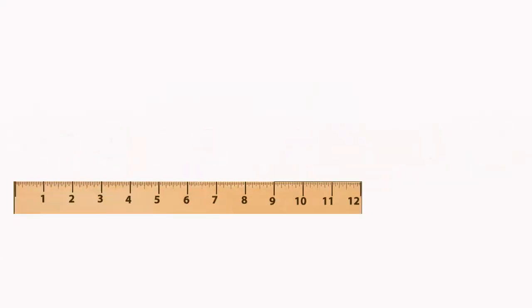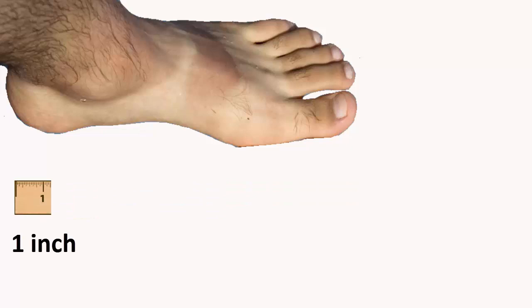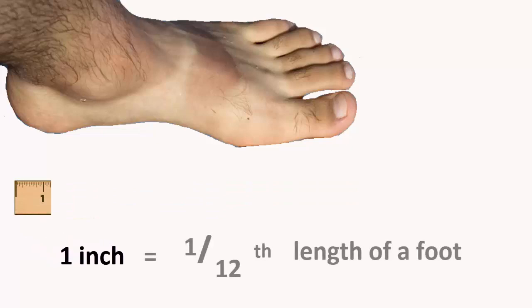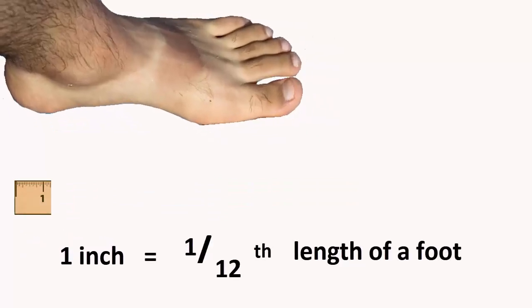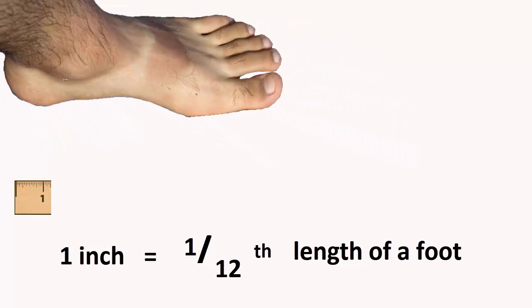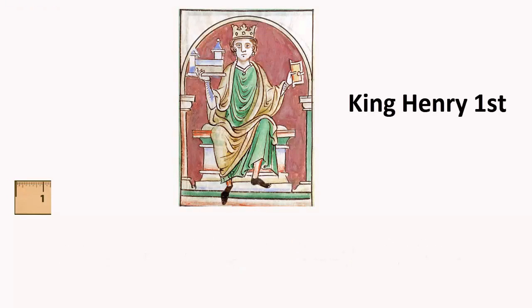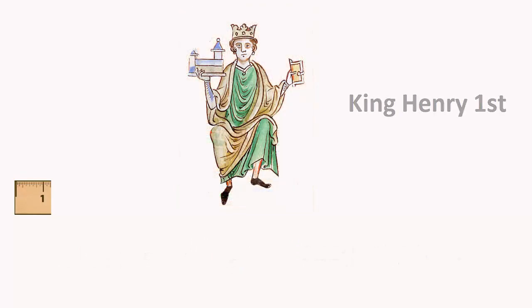An interesting coincidence is that an inch is a twelfth of a foot — originally a real foot. The problem is that different people have different foot lengths. To solve this, society chose King Henry the First's foot as its fixed standard.